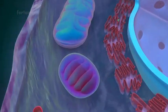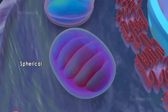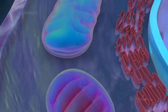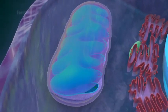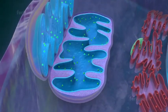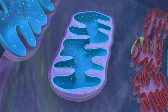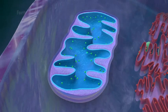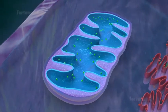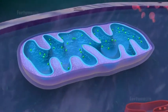Mitochondria vary in shape from almost spherical to elongated ovals. They are bound by two membranes; each membrane is a phospholipid bilayer with embedded proteins. The outer membrane is smooth.